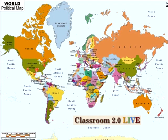I'm in St. Catharines, Ontario, in Canada. Shambles is in Thailand. Someone from Argentina, Phoenix for Peggy, Texas for Kim. It's nice to see where people are located throughout the world.